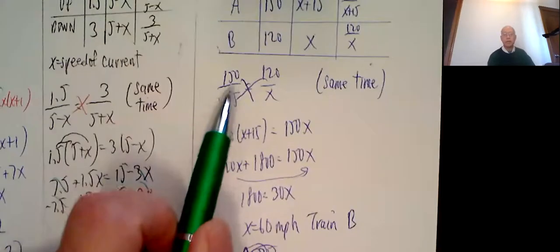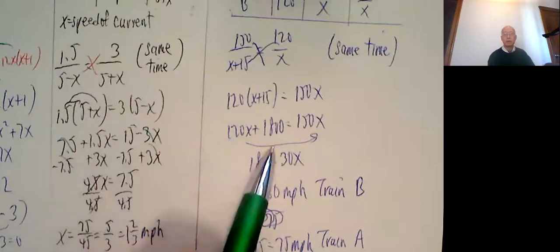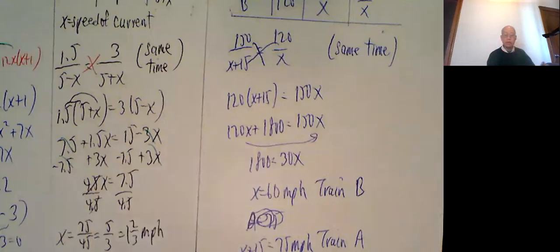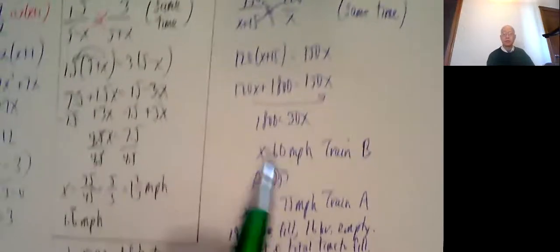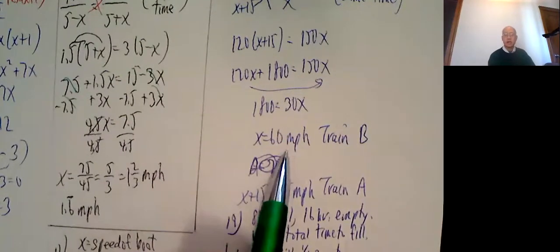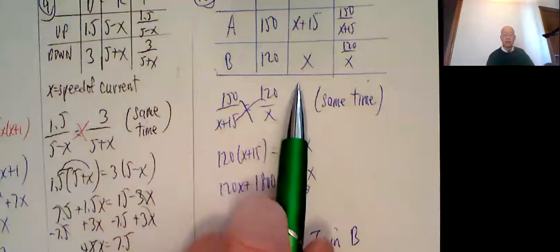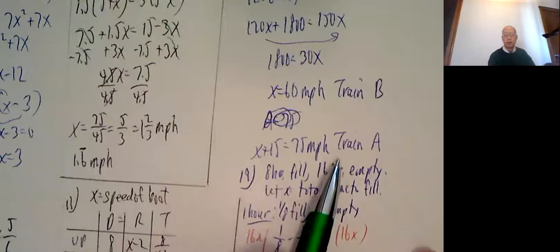Cross multiply, 150 times x equals 120 times x plus 15. Distribute, 120x plus 1800 is 150x. Subtract 120x on both sides. 1800 equals 30x. Divide by 30, x is 60 miles an hour for train B. Train A is 15 miles an hour faster, so 75 miles an hour for train A.